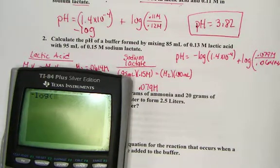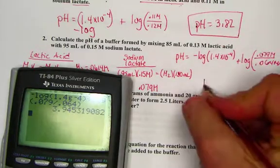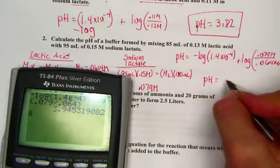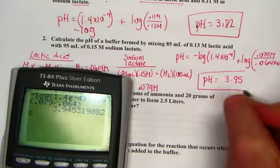So, negative log of our Ka, 1.4 E negative 4, plus the log of the ratio, 0.079 divided by 0.064. And our pH for this solution is buffered to be 3.95 pH units.